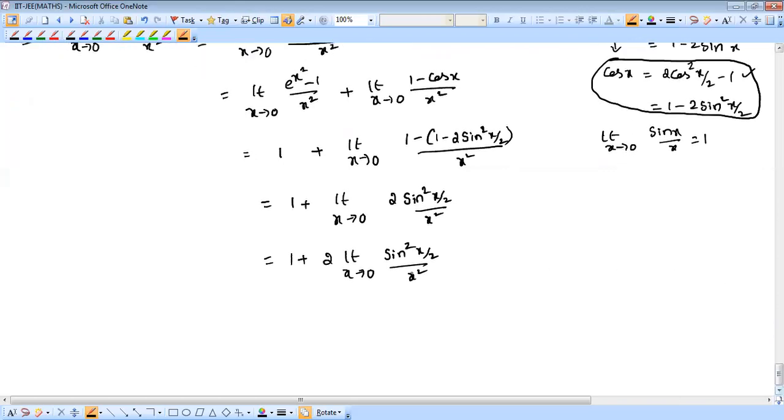Now here, the function of sin is square with x by 2; here only x square. So if you want to get this value as 1, we have to balance it. How do you balance it? By 4 into 4. Why we need to write it?